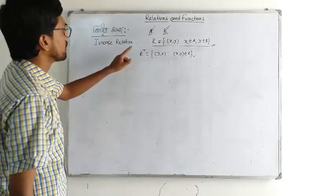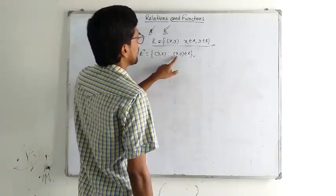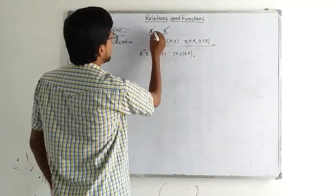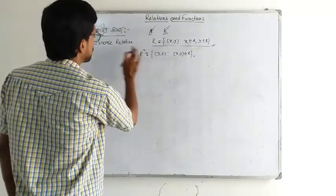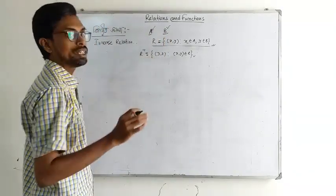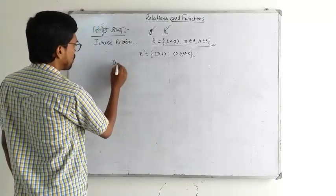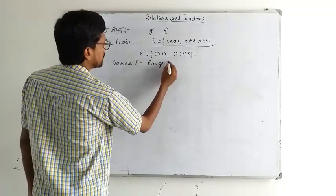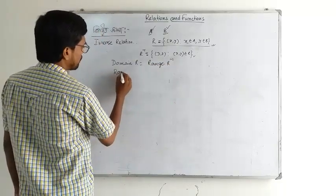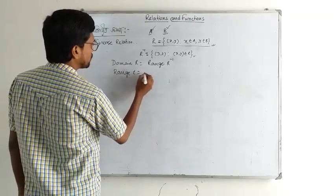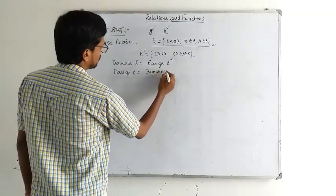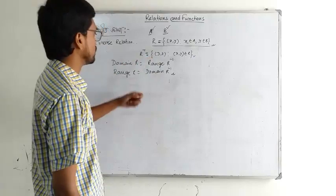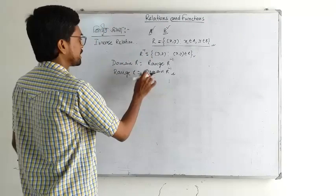R inverse is equal to the set of (y, x) such that (x, y) belongs to R. Therefore, the domain of R is equal to the range of R inverse. Similarly, the range of R is equal to the domain of R inverse. So that is the solution.